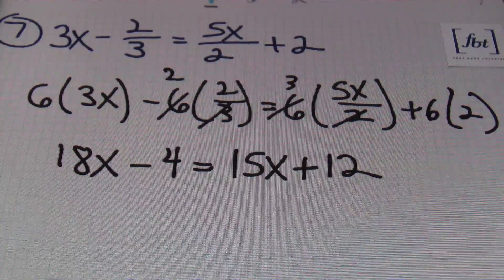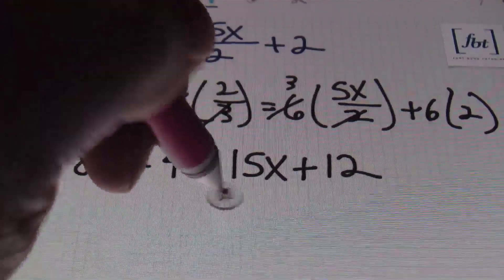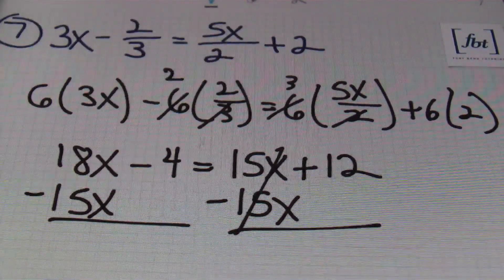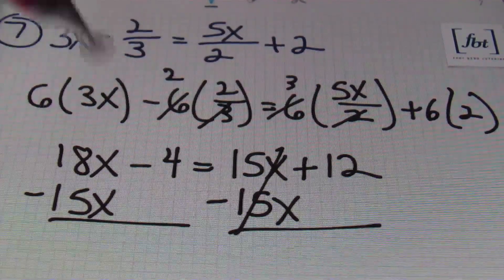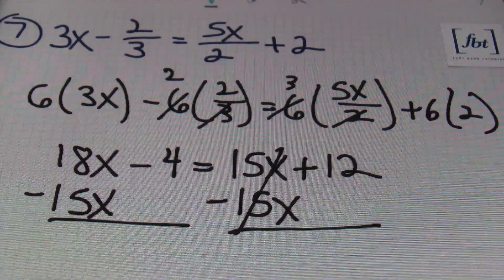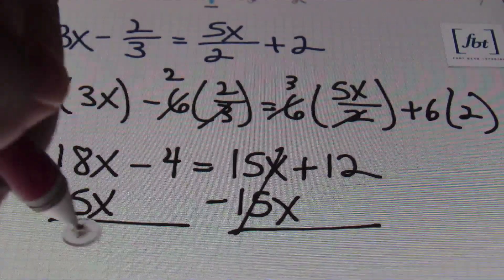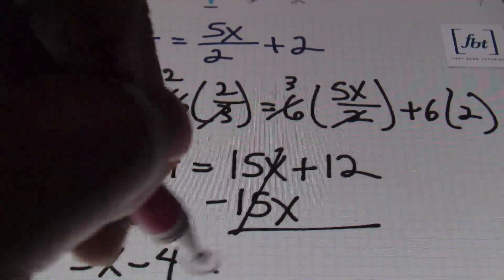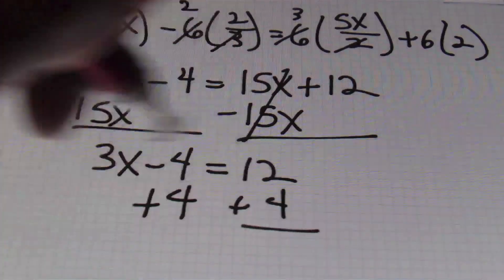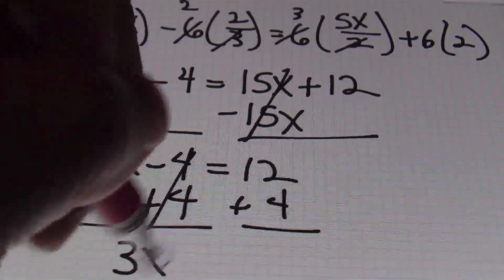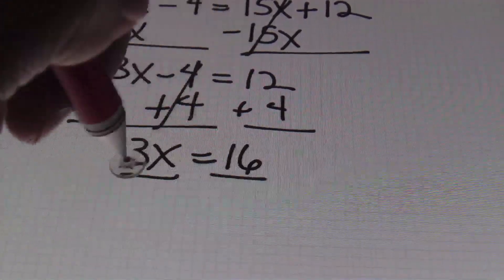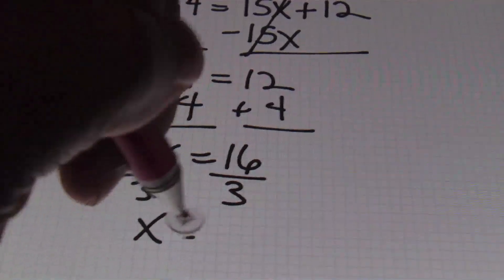From here I'll isolate my variable and get it on one side of the equal sign. I'm going to subtract 15x from both sides — I prefer a positive coefficient in front of the variable, so that's why. So 18x minus 15x is 3x; I have 3x minus four which equals 12. Adding four to both sides — the opposite of negative four is positive four — gives me 3x equals 16. Then dividing both sides by three, I end up with x equals 16-thirds.